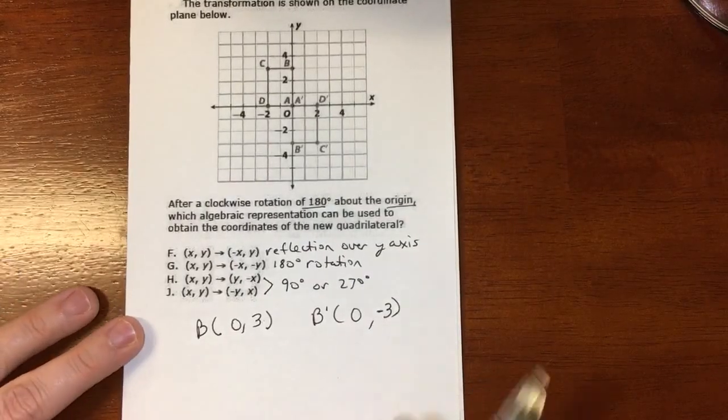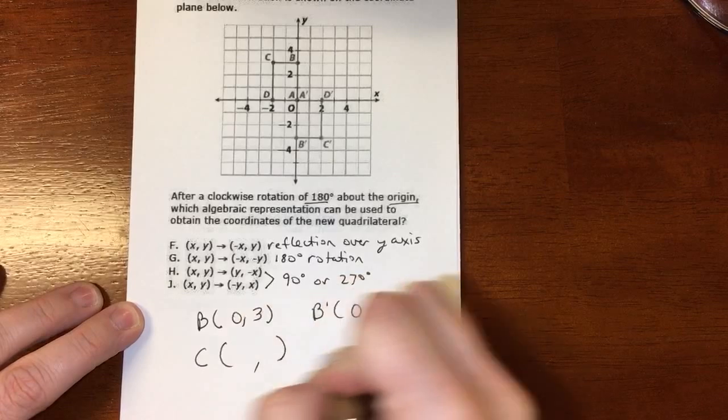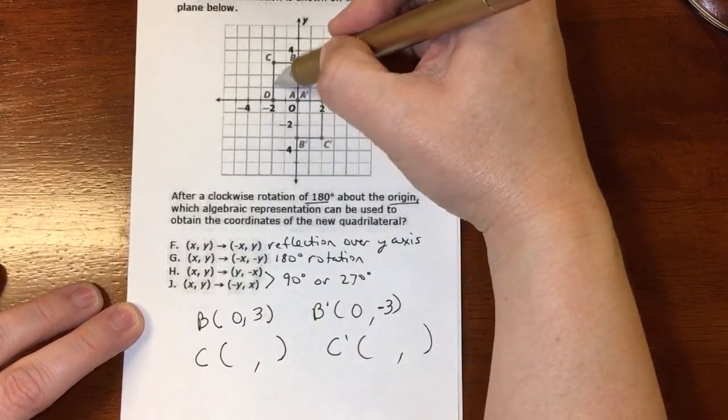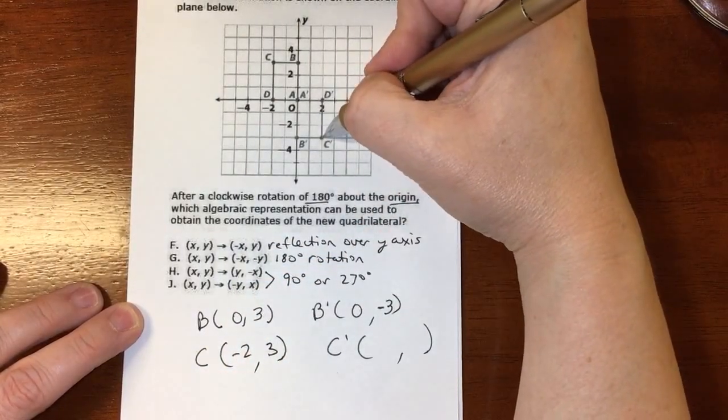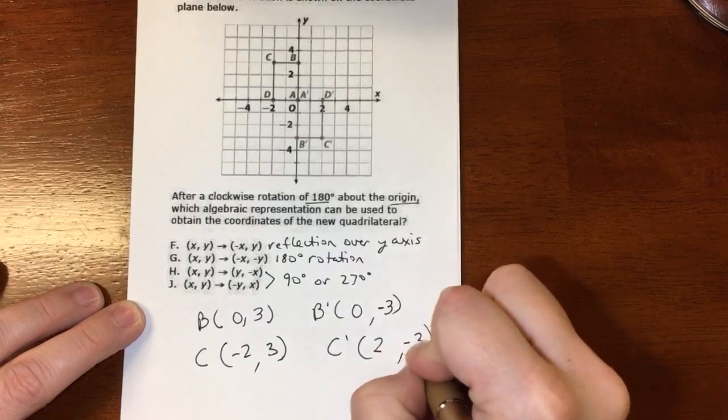Alright, so if I pick - let's use this C coordinate. Alright, so C is at (-2, 3), and C prime is at (2, -3).